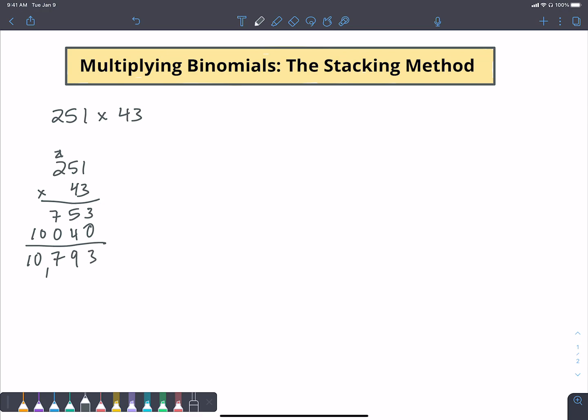So that's typically how we would do that. Now, this works even if I broke it into the place values of each one of these things. So here I'm going to have 200 plus 50 plus 1, and then 40 plus 3. And then I'm going to multiply each of these things together. So if I take 3 times 1 plus 3 times 50 is 150. Then I'm going to put my 100 over here. 3 times 200 is 600 plus this 100 is going to give me 700.